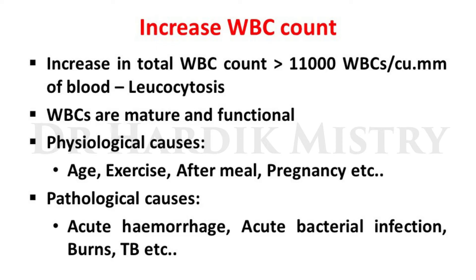Increase in total WBC count above 11,000 WBCs per cubic mm — the condition is known as leukocytosis. WBCs are mature and functional. Physiological causes: age, exercise, after meal, and pregnancy. Pathological causes: acute hemorrhage, acute bacterial infection, burns, and TB — all conditions with abnormally increased WBC count.